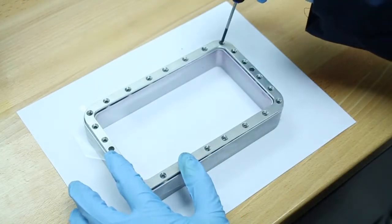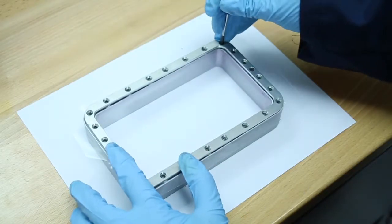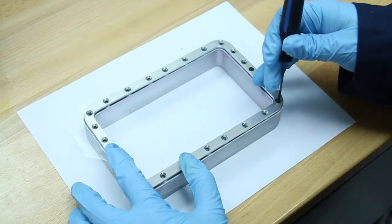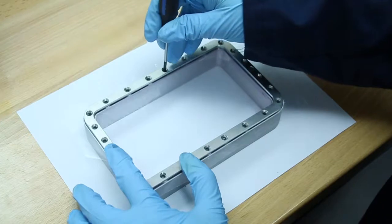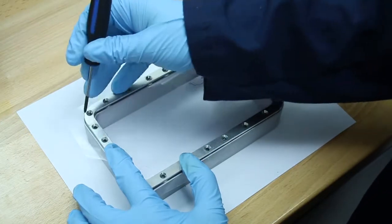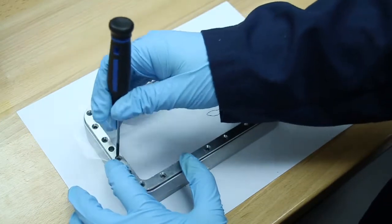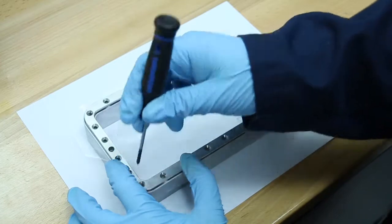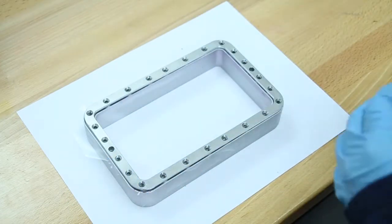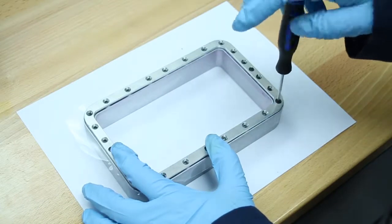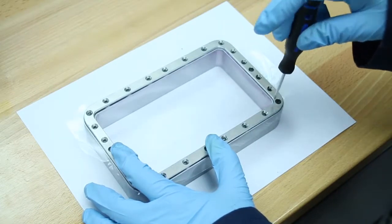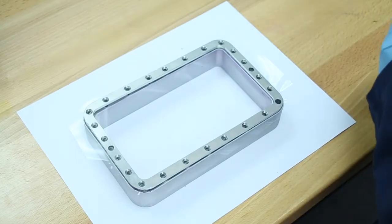Start by poking holes in the corners, then one hole on each side of the frame. Screw in each corner halfway, then on each of the sides. This will allow the frame to slowly transition back into its original location.